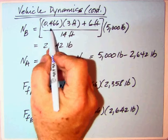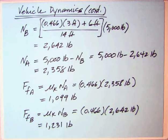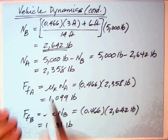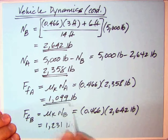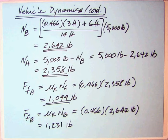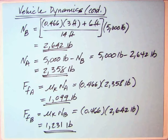If we put in our μ_K that we found, 0.466, the three feet, six feet, and divide by 14, multiply by 5,000, we get 2,642 - exactly what's in the MERM. Subtract that from 5,000 and get 2,358, exactly the answer that the MERM has. Multiply the 0.466 times N_A to get F_A and get 1,099. We're okay there. And then 0.466 times 2,642 gives 1,231. So all that works out. The question is, what about this inertial force?